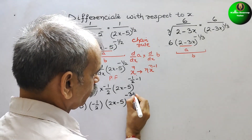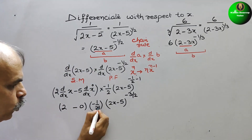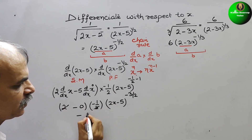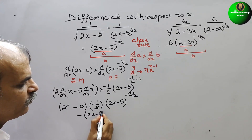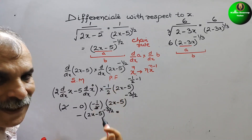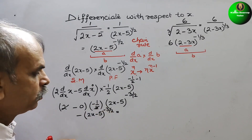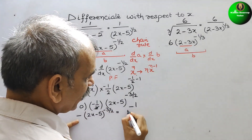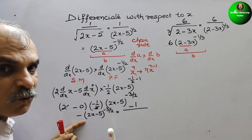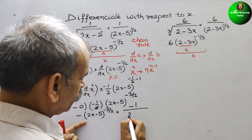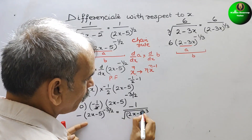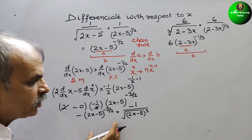Now solving: 2 and 2 cancel, leaving minus 1. So the answer is minus of (2x minus 5) to the power minus 3 by 2. Since the power is negative, we bring it down: it becomes minus 1 by (2x minus 5) to the power 3 by 2. Here, 3 means it is a cube, and 1 by 2 means square root. So the final answer for the first part is minus 1 by the square root of (2x minus 5) cubed.